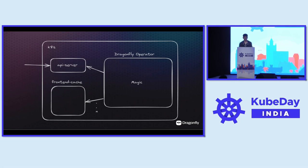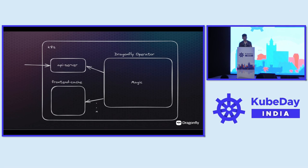The architecture is this: on the API server, we apply objects, and the Dragonfly operator does some magic and creates a stateful set and a service that the user can use to talk to it. It can add more instances — you can ask for a new Dragonfly resource for your front-end team, and it will create a new stateful set and service to back that up, and clients can start using the instance.